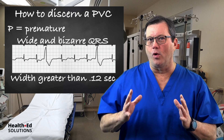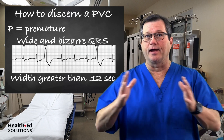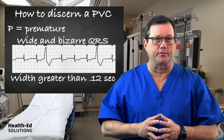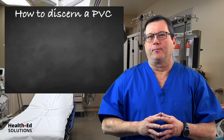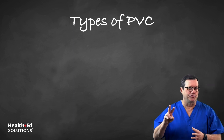PVCs will have a QRS width greater than 0.12 seconds. So the QRS width, again, is greater than 0.12 seconds.